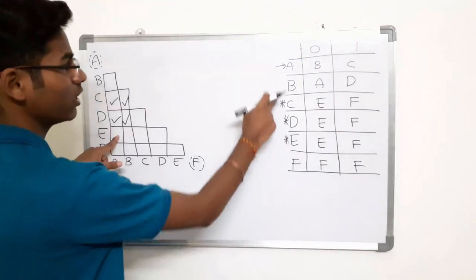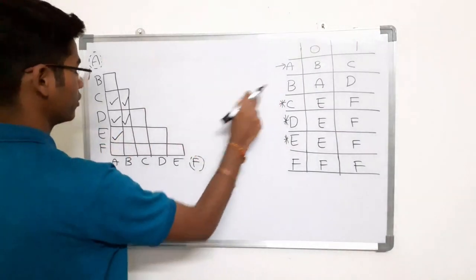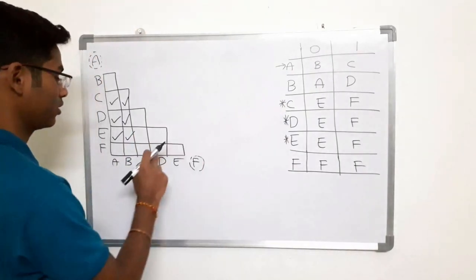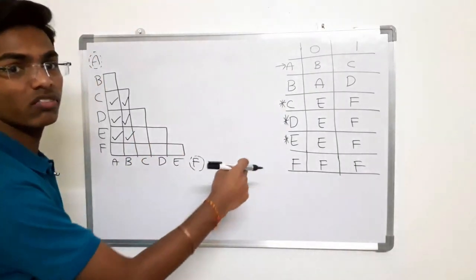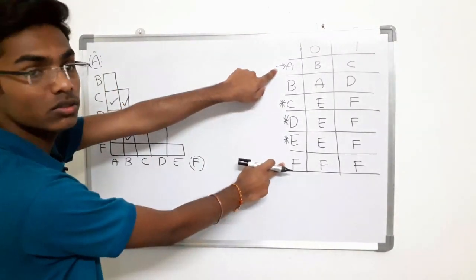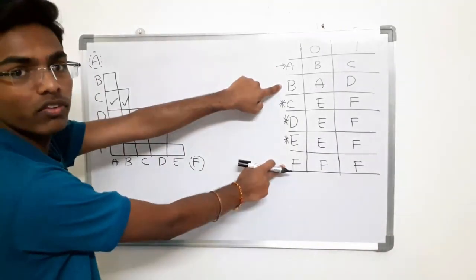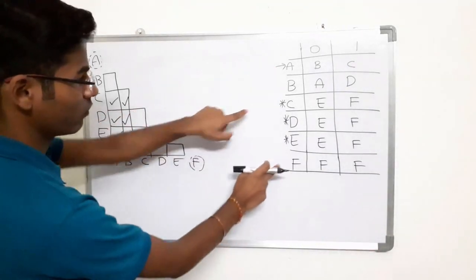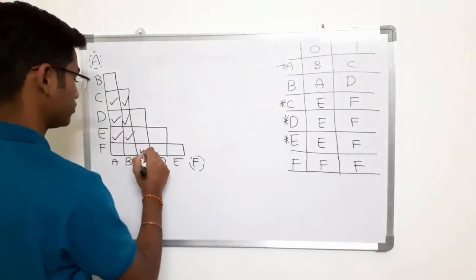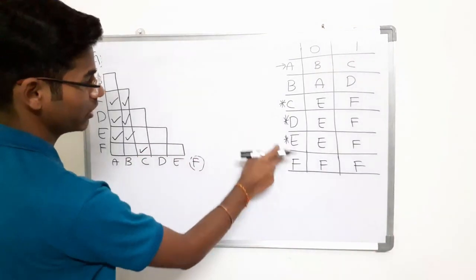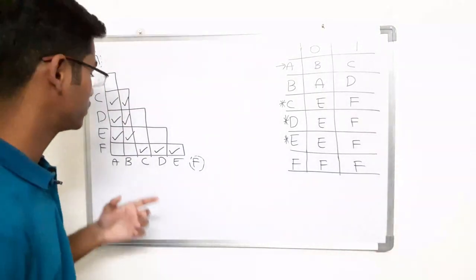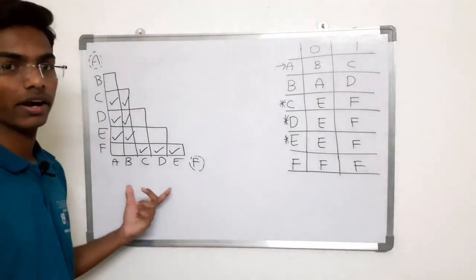For D and C: both are final states. Our condition is only one should belong to final state and another to non-final state — here both are final, so leave it. D and C remains unmarked. For E and A: E is final, A is non-final, mark it. For E and B, E and C, E and D: both are final states, so don't mark them. For F and A, F and B: both are non-final states, so don't mark them. For F and C: one is final, one is non-final, so mark it. Similarly F and E: mark it.